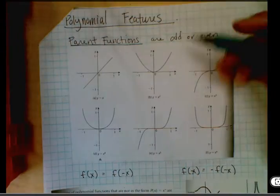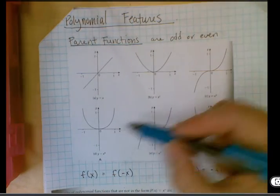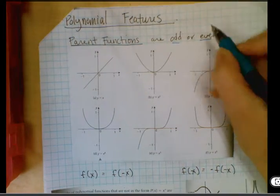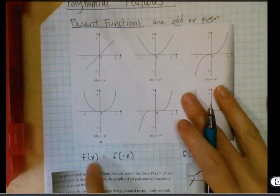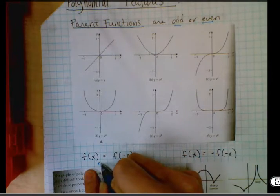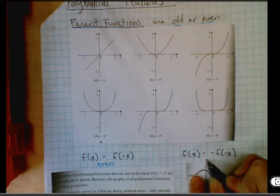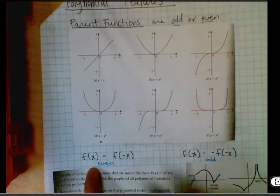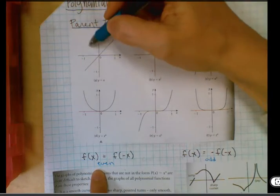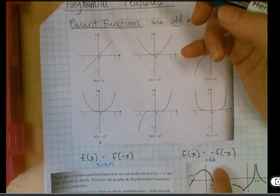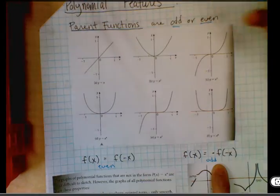So all of the parent functions for polynomials are either odd or even. We're going to use the definition here of even and the definition of odd to help us decide. Even are symmetrical across the y-axis and odd have rotational symmetry.